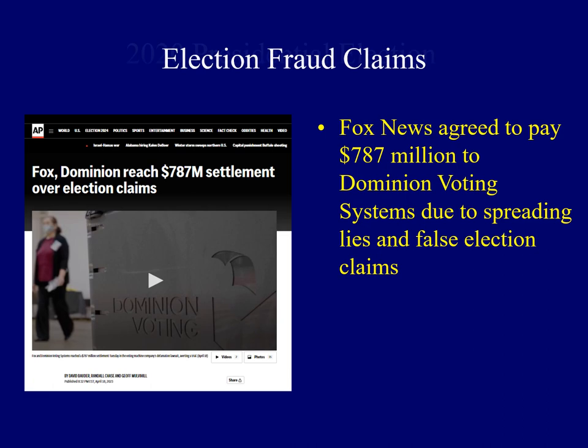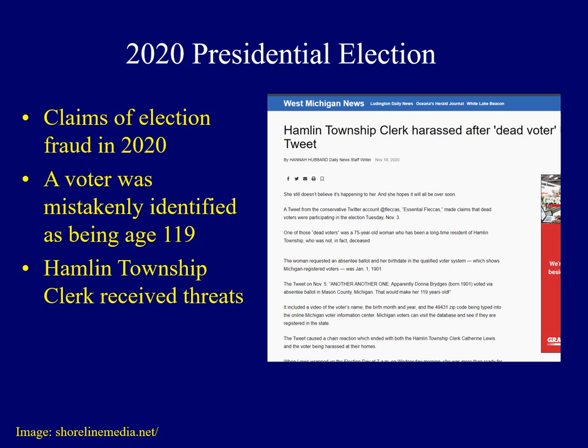There were numerous claims of election fraud in the 2020 election in many states, but one actually took place close by in Mason County, dealing with the situation in Hamlin Township — which is actually where I vote. The voter rolls or names of the people who vote are public information. One person's birth date was misidentified — a person was identified as being 119 years old. This was a mistake. The Hamlin Township clerk actually fixed this before the election; however, some people were looking at the voter rolls after the election and noticed this. Even though it had been officially fixed, it wasn't public yet, and the Hamlin Township clerk received all sorts of threats in the middle of the night — phone calls, emails, threats to her life, and a lot of harassment. This is an example of some of these false election claims in the 2020 election.